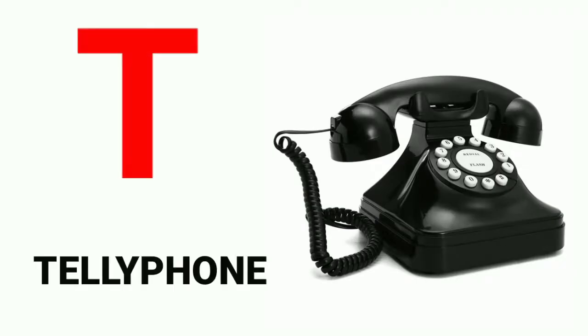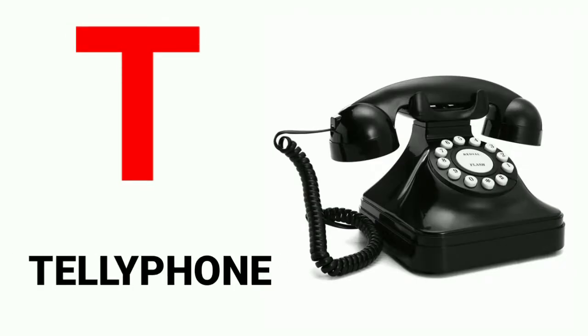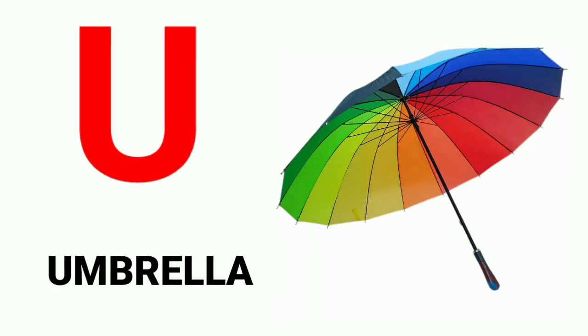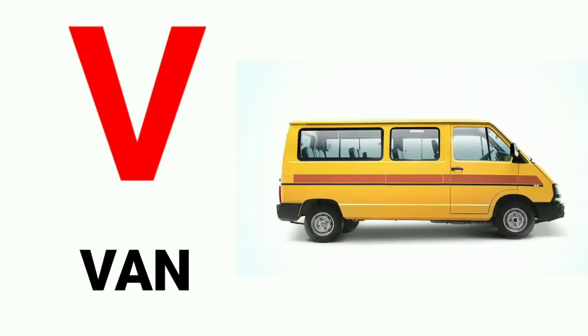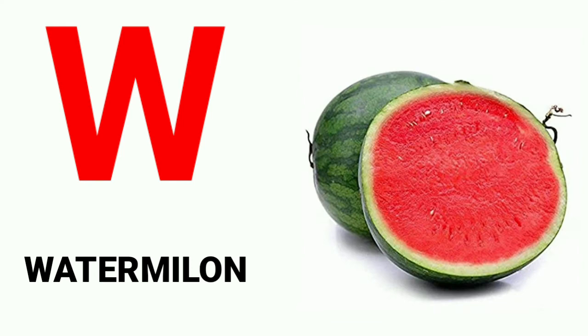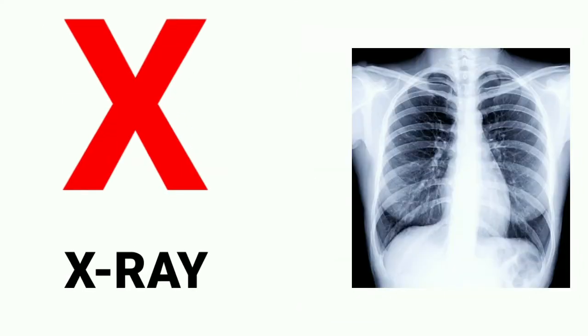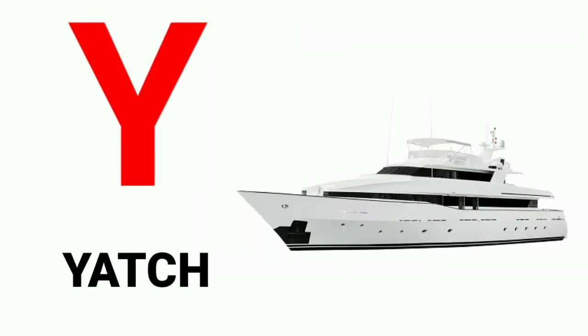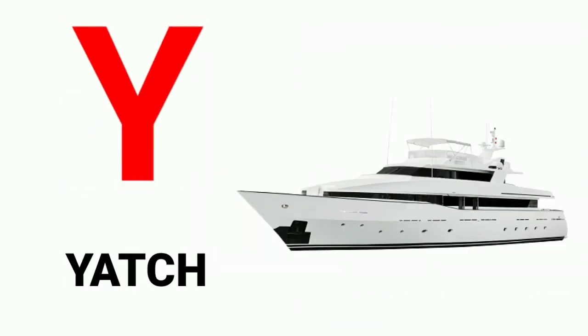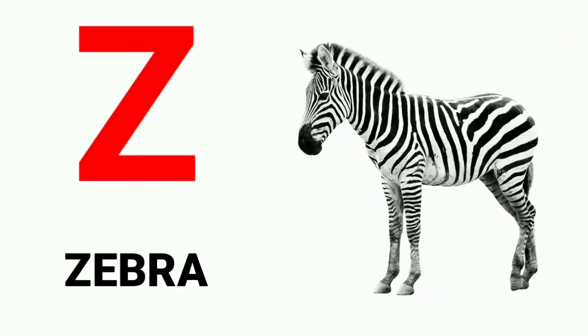R for rose, S for sun, T for telephone, U for umbrella, V for van, W for watermelon, X for x-ray, Y for yacht, Z for zebra.